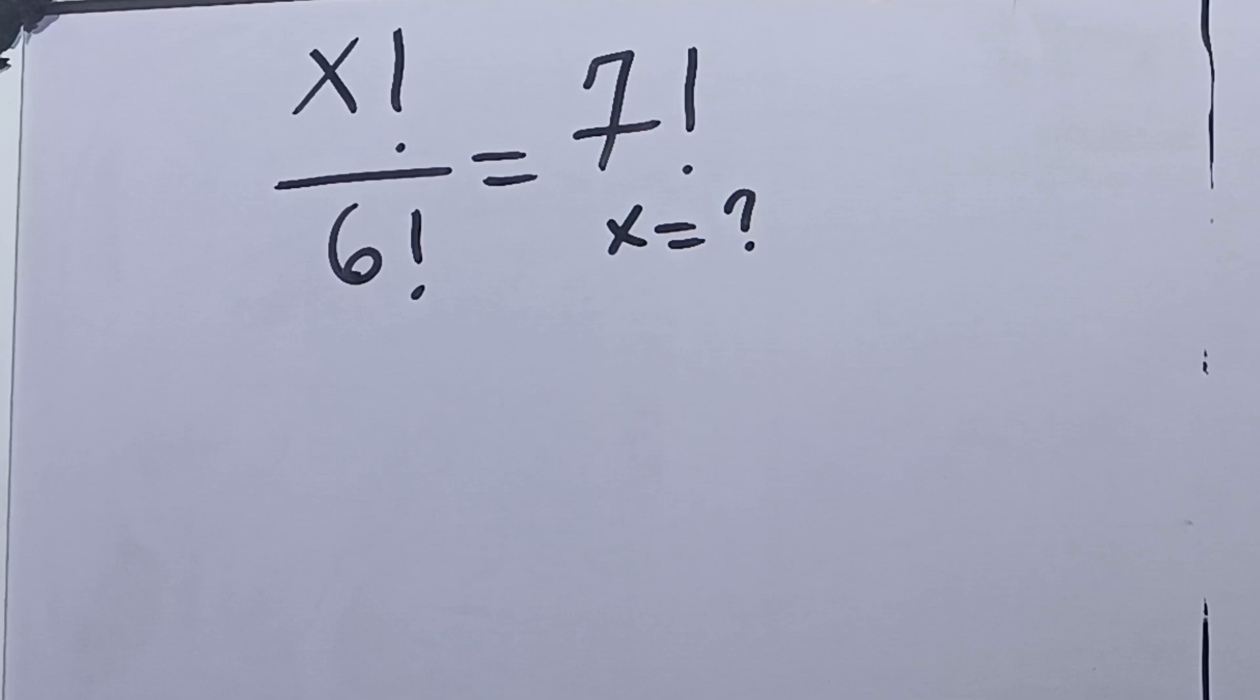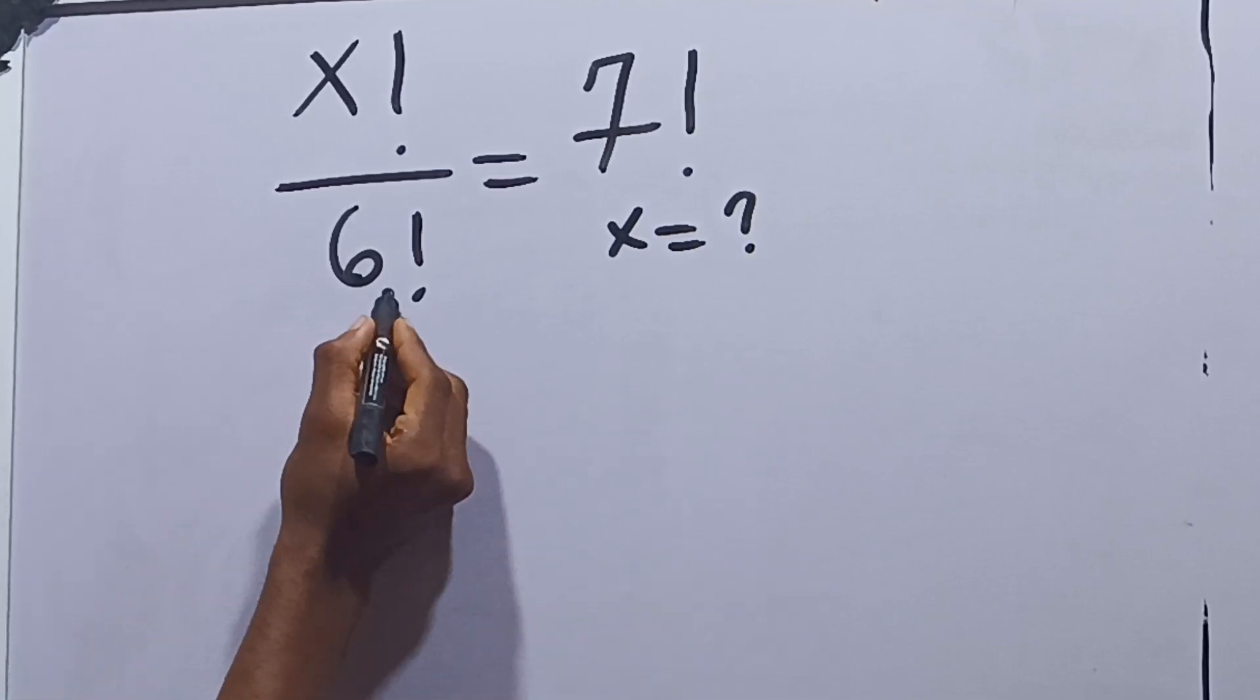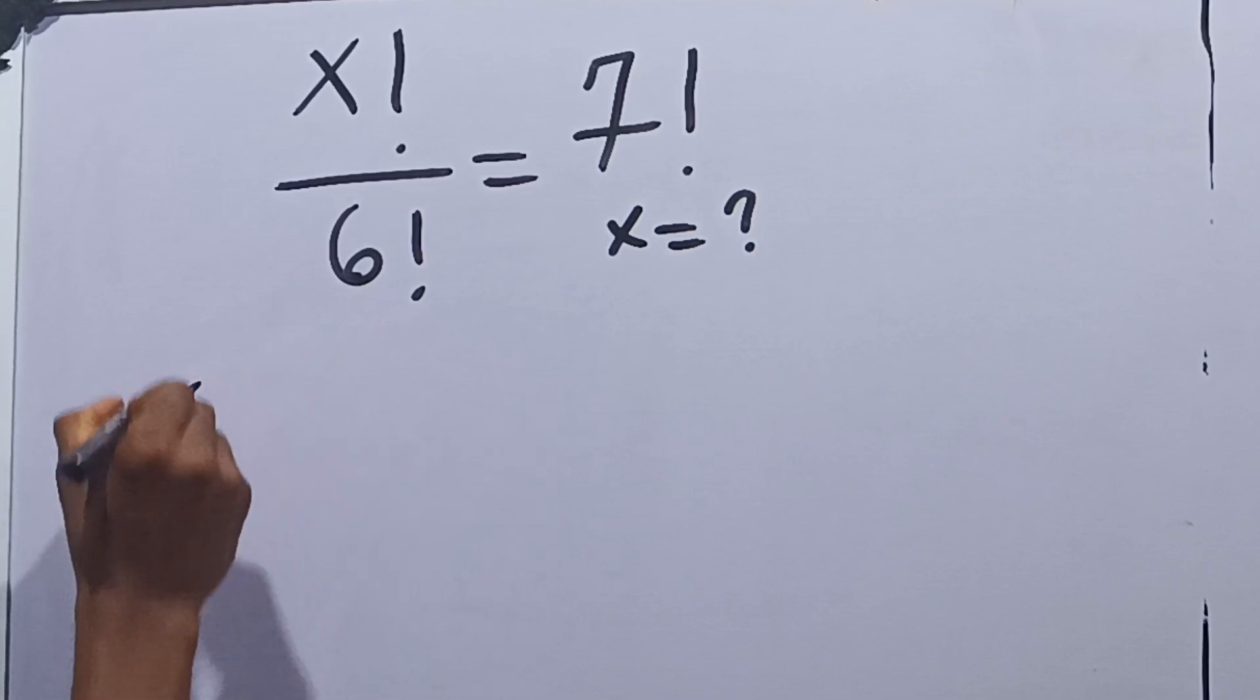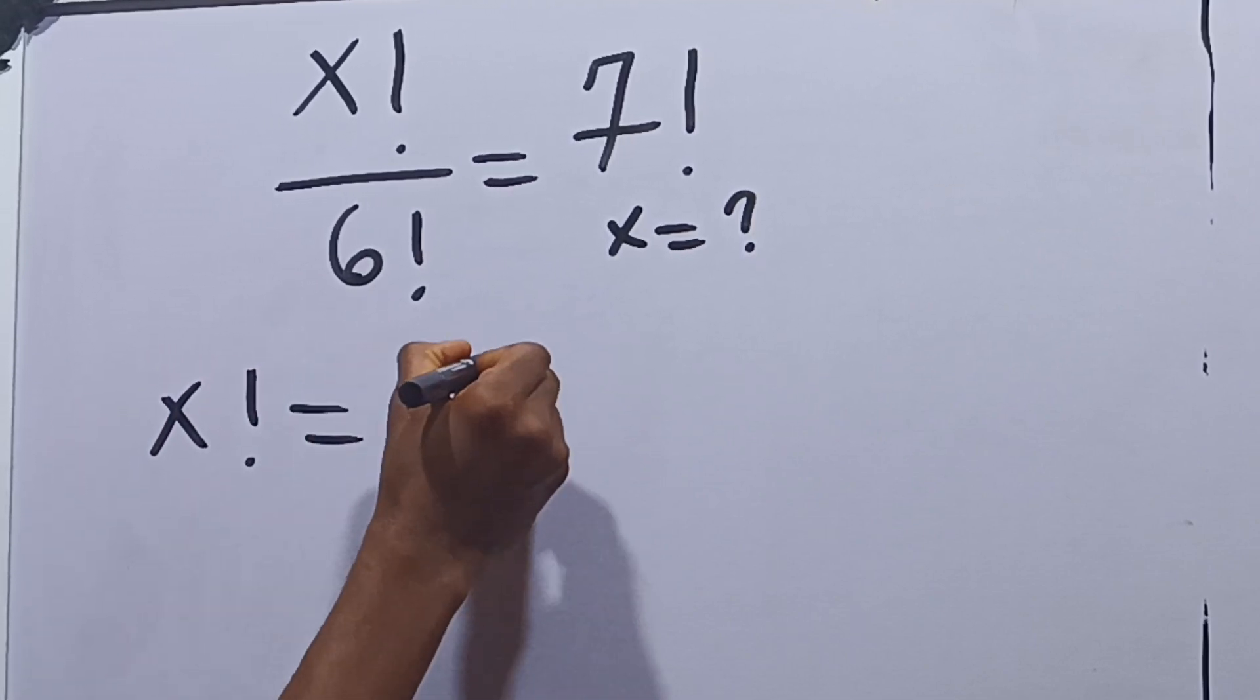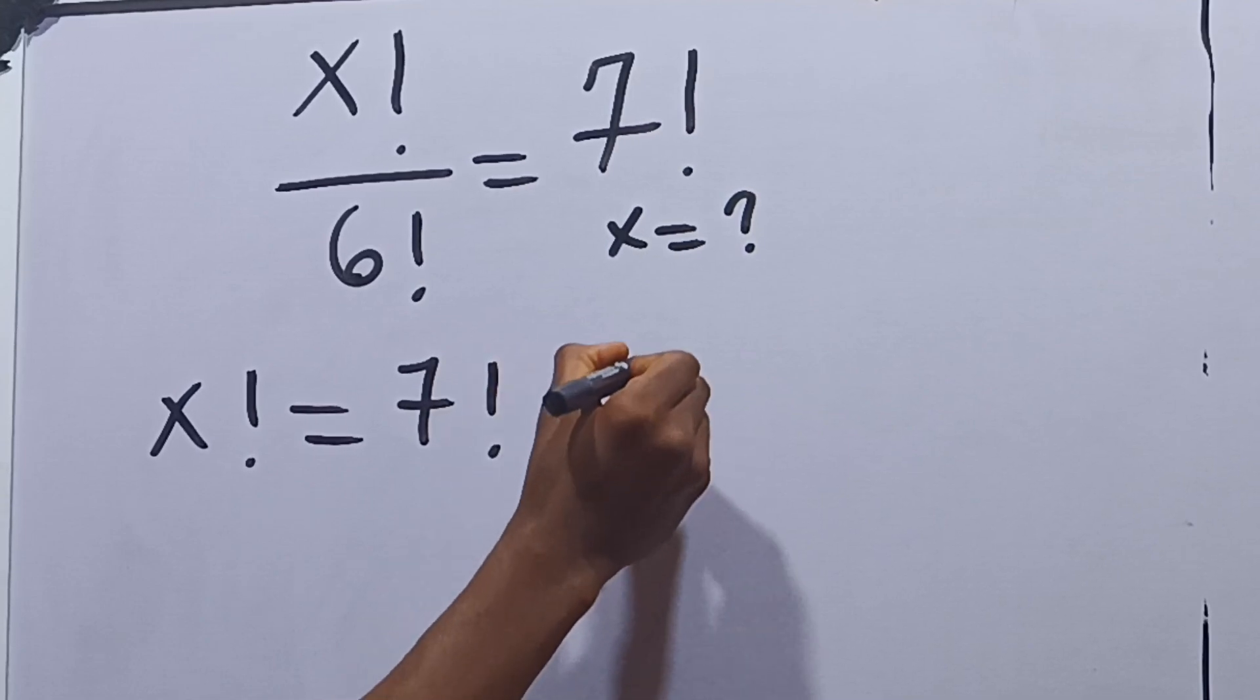Now let's do this. The first thing we can say here is let's multiply both sides by 6 factorial. So we have that our x factorial will be equal to 7 factorial times 6 factorial.